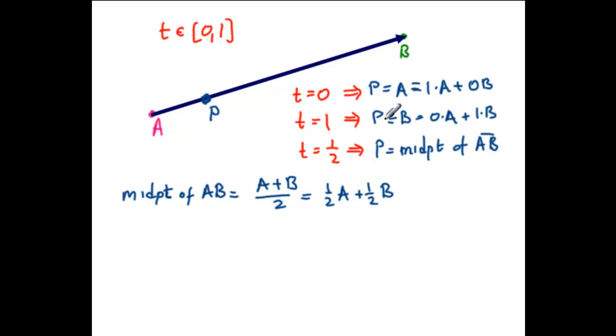So that's what we want. We want a formula for P that gives us this one when T equals zero, this one when T equals one, and this one when T equals one-half. So the formula, I always have trouble remembering which half goes with which half, but it's one minus T times A, because then when T equals zero this is one times A, and now we want T times B.